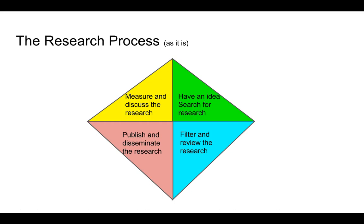In terms of how it applies for librarians and information professionals, the research process is very much based around the idea that researchers have an idea for research, they filter and review the research that currently exists, they then publish and disseminate their research, and then they measure the research and discuss it afterwards. We know this model has been around for years — it is slightly staid and not particularly reactive to what goes on the web in terms of conversations and discussions.